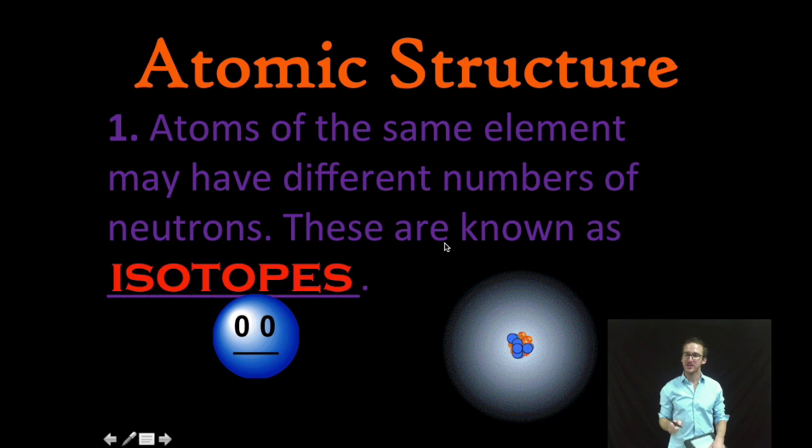The first thing we want to do is remember that atoms of the same element may have different numbers of neutrons and that these are known as isotopes.